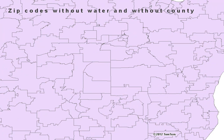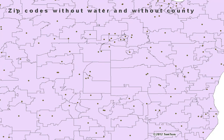Our first product is zip codes without water and without county. These represent zip code polygons that do not have water removed from them and do not have county lines incorporated into them. With all the following products, we have a zip point 5 product. As you can see, in some cases there are two points for one polygon. The second point usually represents a large business or post office with its own unique postcode. The first point represents the postcode polygon itself.